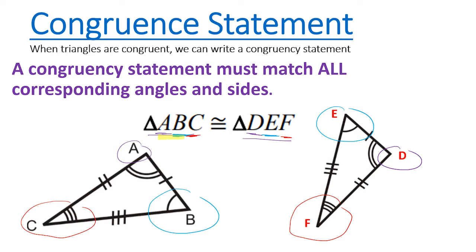Side AB has one congruence mark, and side DE also has that one congruence mark. Side BC has three congruence marks, and EF has three congruence marks. Then AC and DF both have two congruence marks. So corresponding angles and sides match up in the congruency statement.